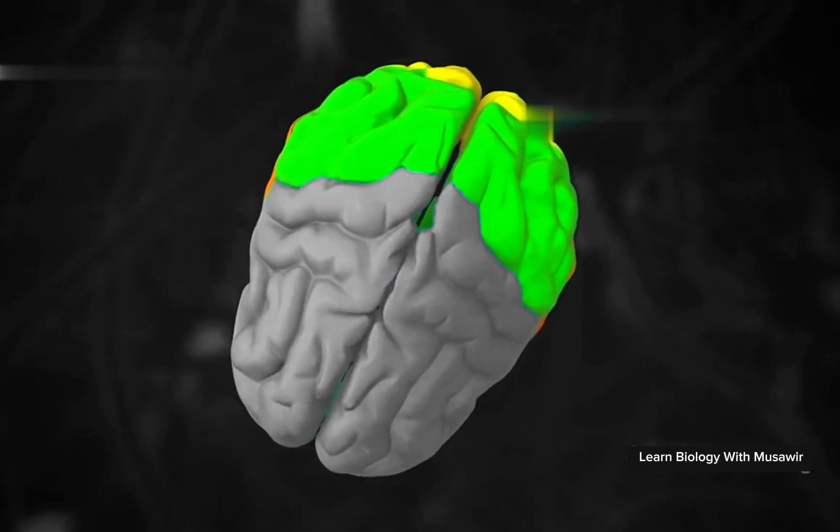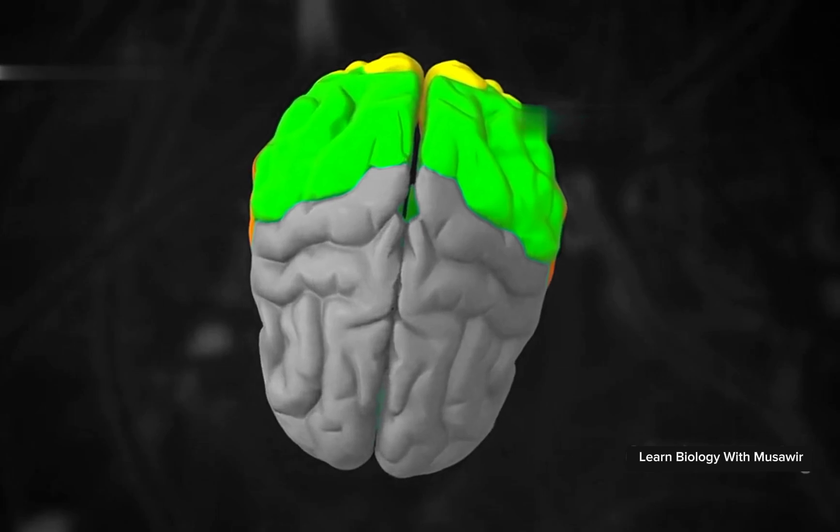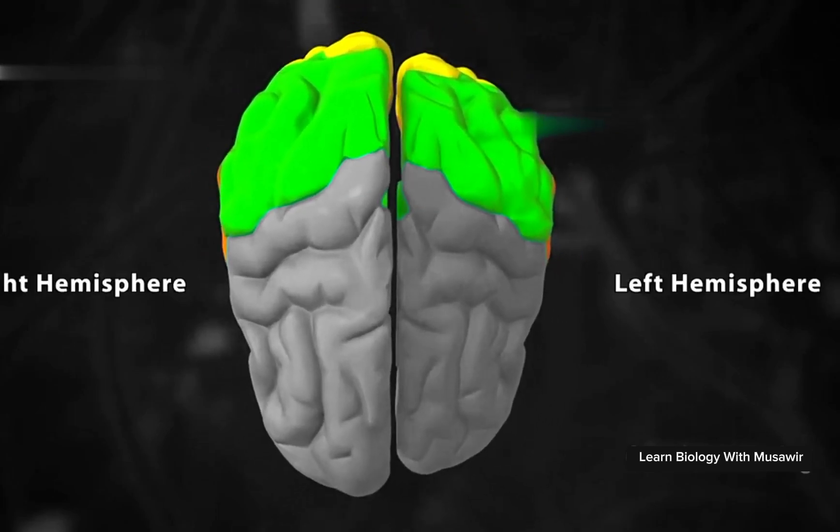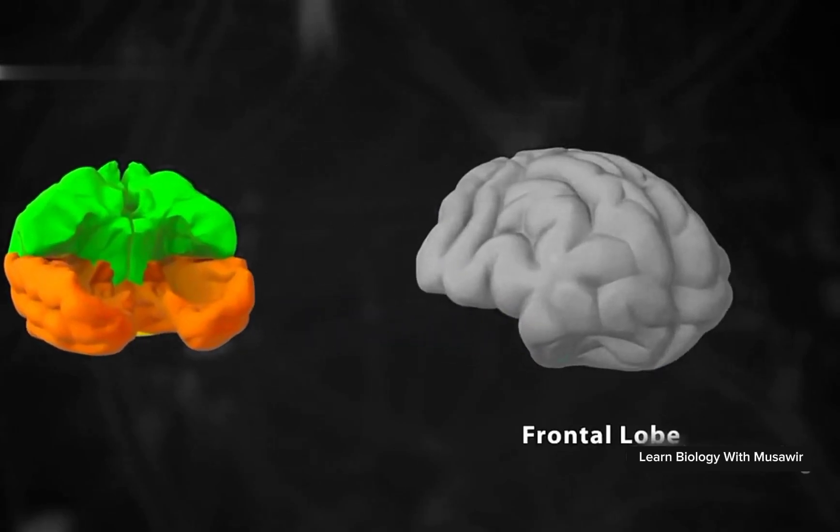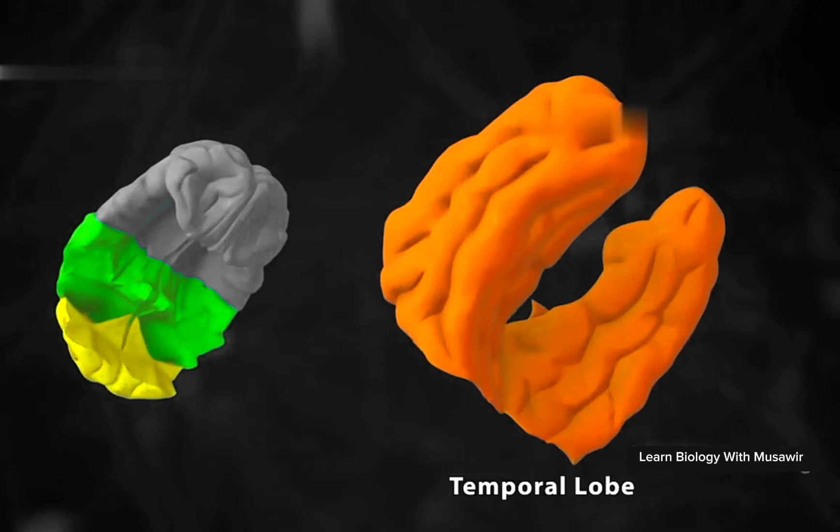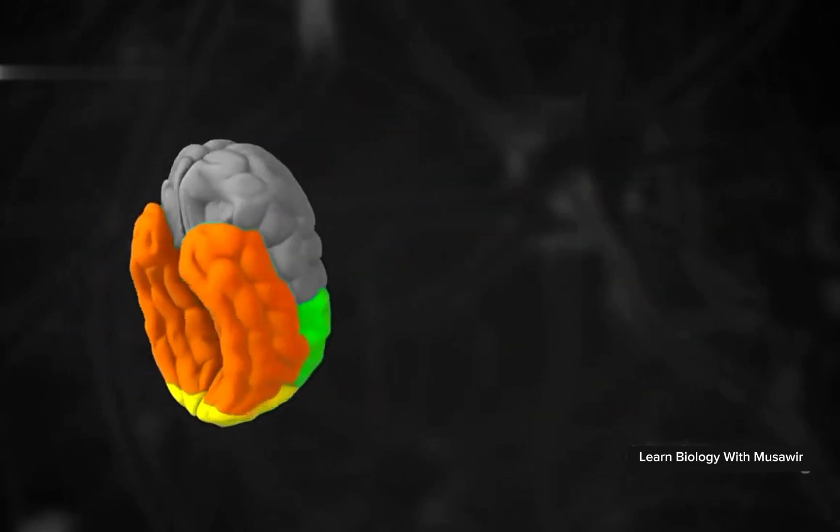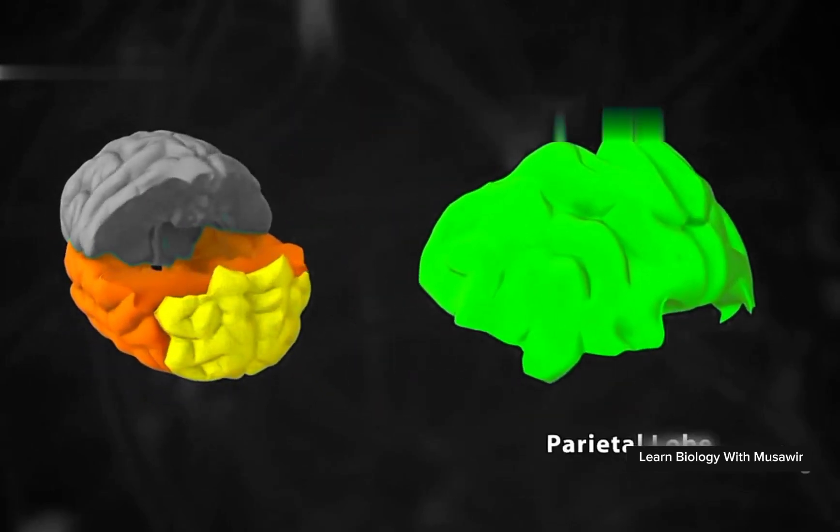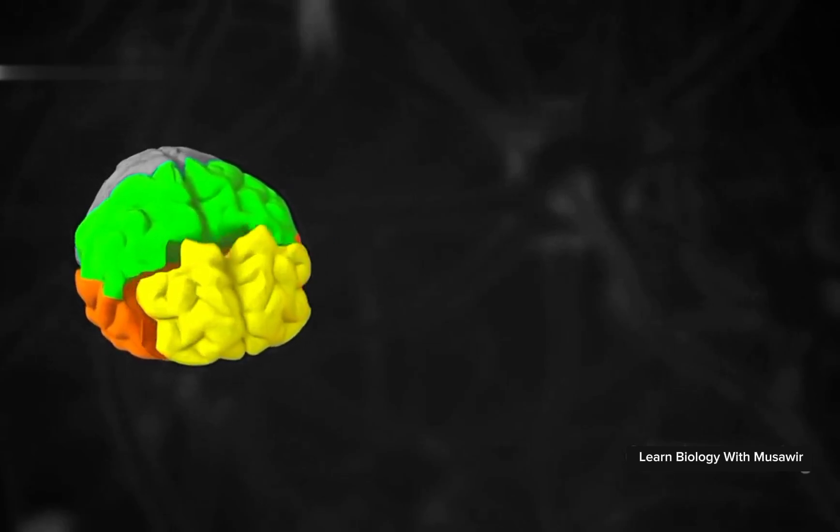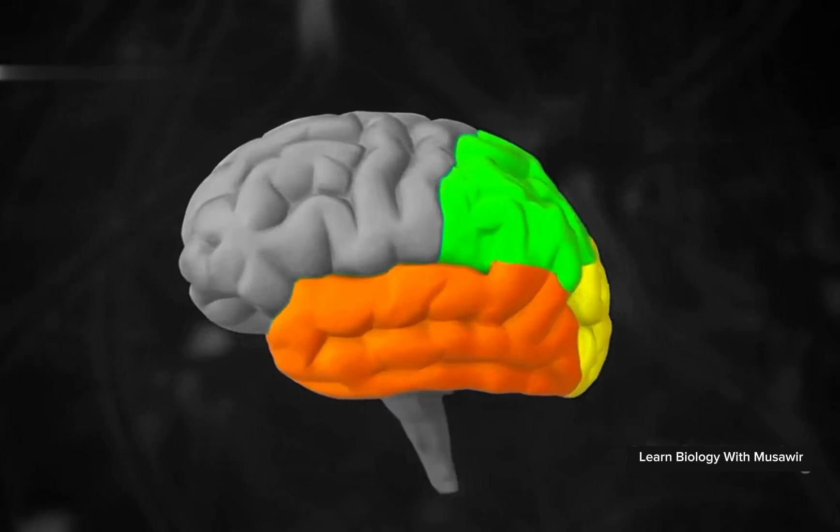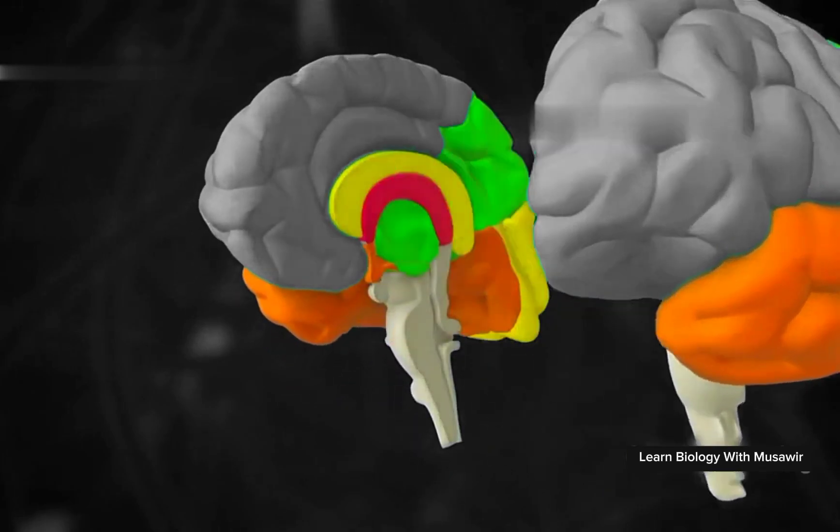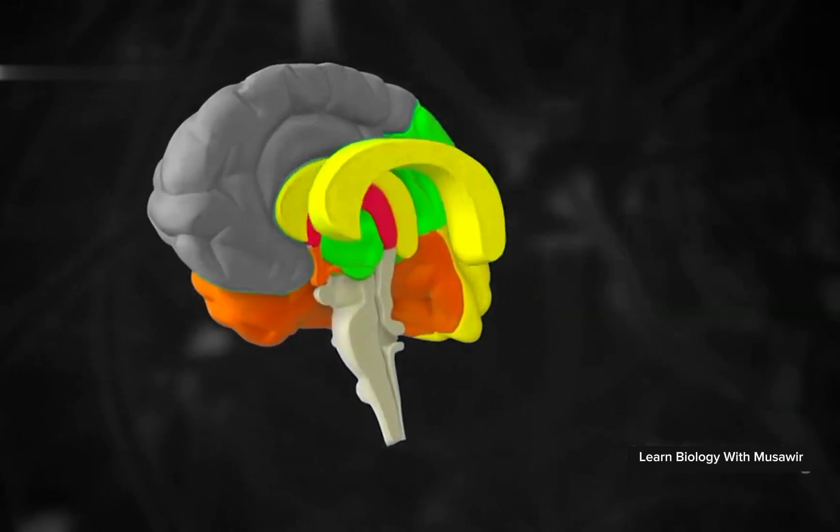The cerebrum is the largest part of the brain and is divided into left and right hemispheres. Each is composed of a frontal, temporal, parietal, and occipital lobe. The two hemispheres are connected by a nerve tract called the corpus callosum.